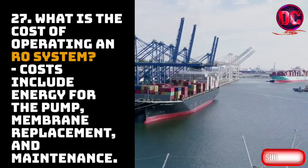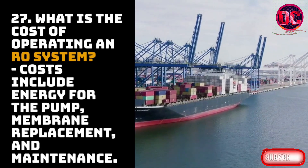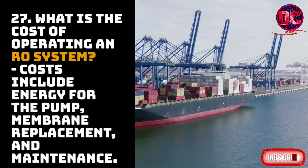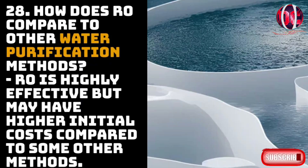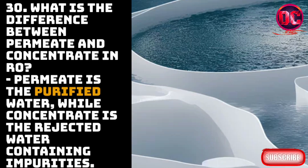27. What is the cost of operating an RO system? Costs include energy for the pump, membrane replacement, and maintenance. 28. How does RO compare to other water purification methods? RO is highly effective but may have higher initial costs compared to some other methods. 29. Can RO systems be used for well water treatment? Yes, RO is often used to treat well water. 30. What is the difference between permeate and concentrate in RO? Permeate is the purified water, while concentrate is the rejected water containing impurities.